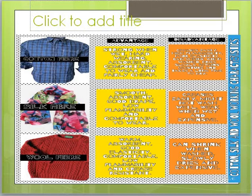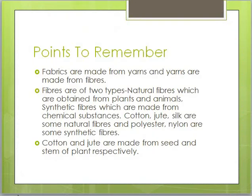Here are some points to remember. Cotton and jute are made from the seed and stem of a plant respectively. Fabrics are made from yarns and yarns are made from fibers. Fibers are of two types: natural, which are obtained from plants and animals, and synthetic fibers, which are obtained from chemical substances. Cotton, jute, and silk are natural fibers, while polyester and nylon are synthetic fibers.